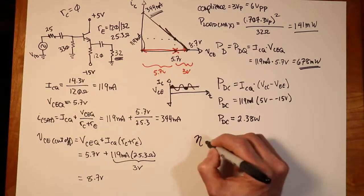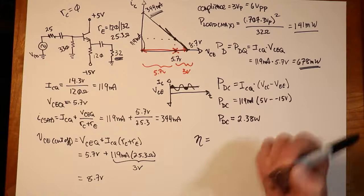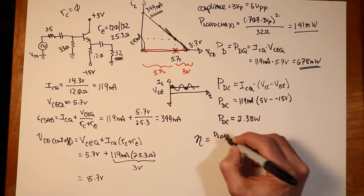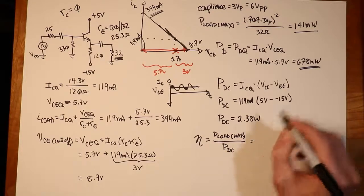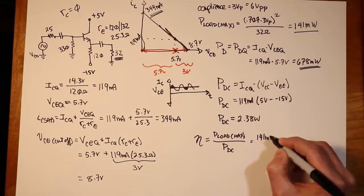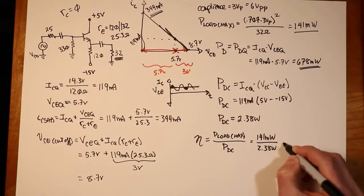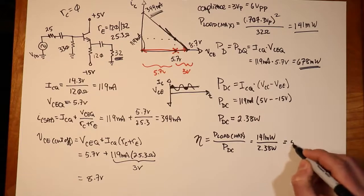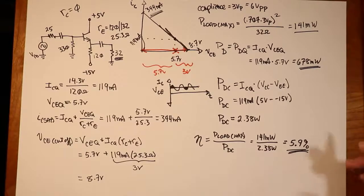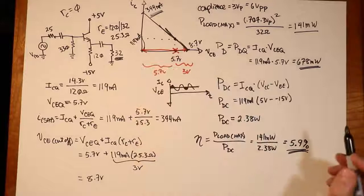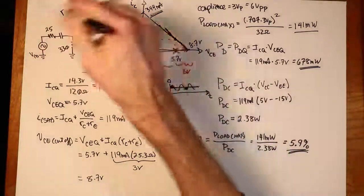The efficiency of a system is always your useful output power versus what you put into it to get it. In our case, the useful output power is P-Load Max. What we put in to get it was PDC. So we've got 141 milliwatts versus 2.38 watts. Expressing that as a percentage, it's only 5.9%. And as we see, this is not an efficient system. You get not even 6% of the input power turned into useful output power.